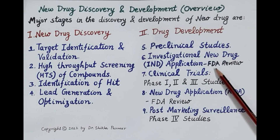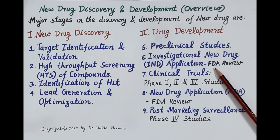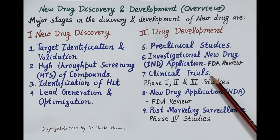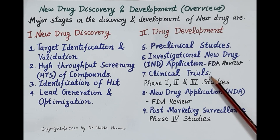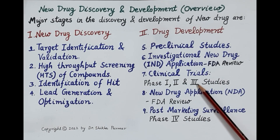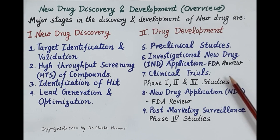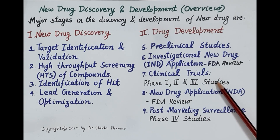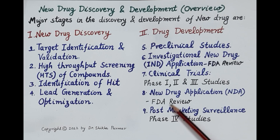If the IND application is approved by the FDA, all five potential drug candidates identified during pre-clinical studies are further screened and evaluated in human beings. These studies are called clinical trials, conducted in three phases: Phase 1, Phase 2, and Phase 3. All three phases are completed in around six to seven years. Data from the clinical trials is compiled in a New Drug Application (NDA) and submitted to the FDA for review.